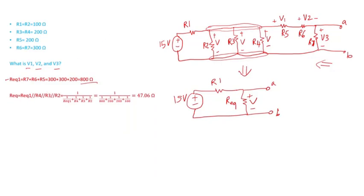R equivalent 1 is in parallel with R4, R3, and R2. For resistances in parallel, the equivalent is 1 divided by the sum of the inverse of all the resistances in parallel. If you carry out the calculation, you get 47.06 ohms—that's R equivalent 2.